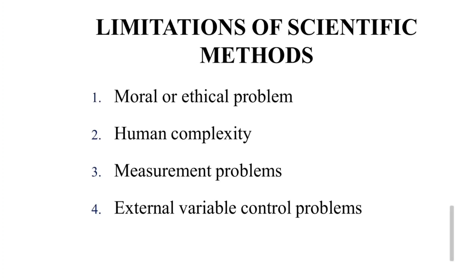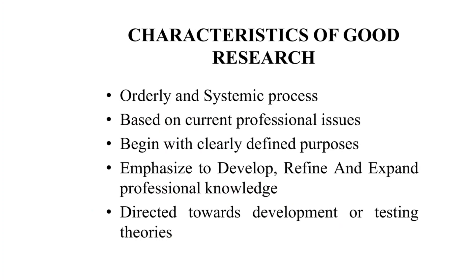The limitations of scientific methods include difficulties you face when doing scientific inquiry. First, ethical problems — moral or ethical issues can occur. Second, human complexity — the complexity of human nature. Third, measurement problems — sometimes in qualitative studies you cannot measure accurately. Fourth, external variable control problems — the same outcome can be influenced by many other factors, so you may not be able to attribute the effect only to your intervention.